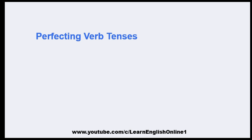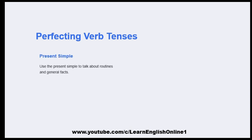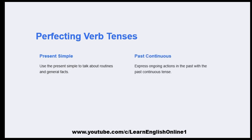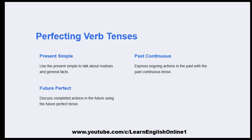Perfecting verb tenses — present simple: use the present simple to talk about routines and general facts. Past continuous: express ongoing actions in the past with the past continuous tense. Future perfect: discuss completed actions in the future using the future perfect tense.